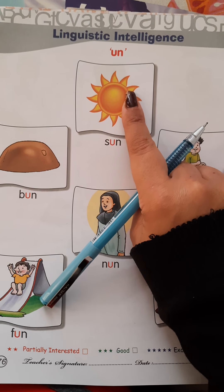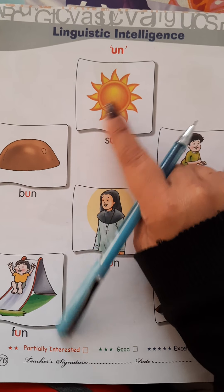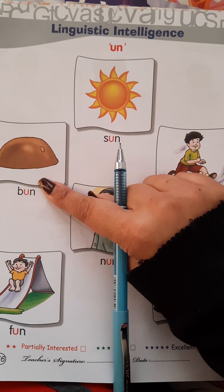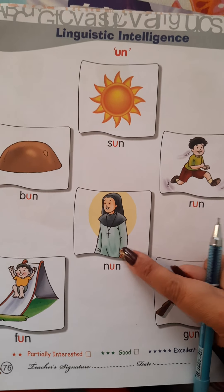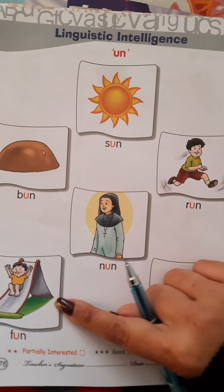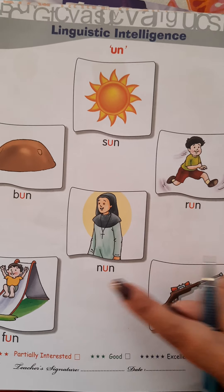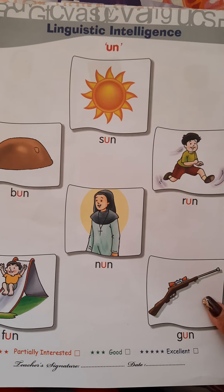Turn your page. UN sound words: sun, bun, run, nun, fun, gun.